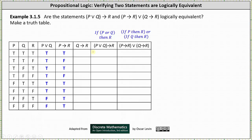Next, if q then r is false only when q is true and r is false; otherwise the implication is true. Notice q is true and r is false in row two and row six, which means if q then r is false in rows two and six. The column is: true, false, true, true, true, false, true, true.